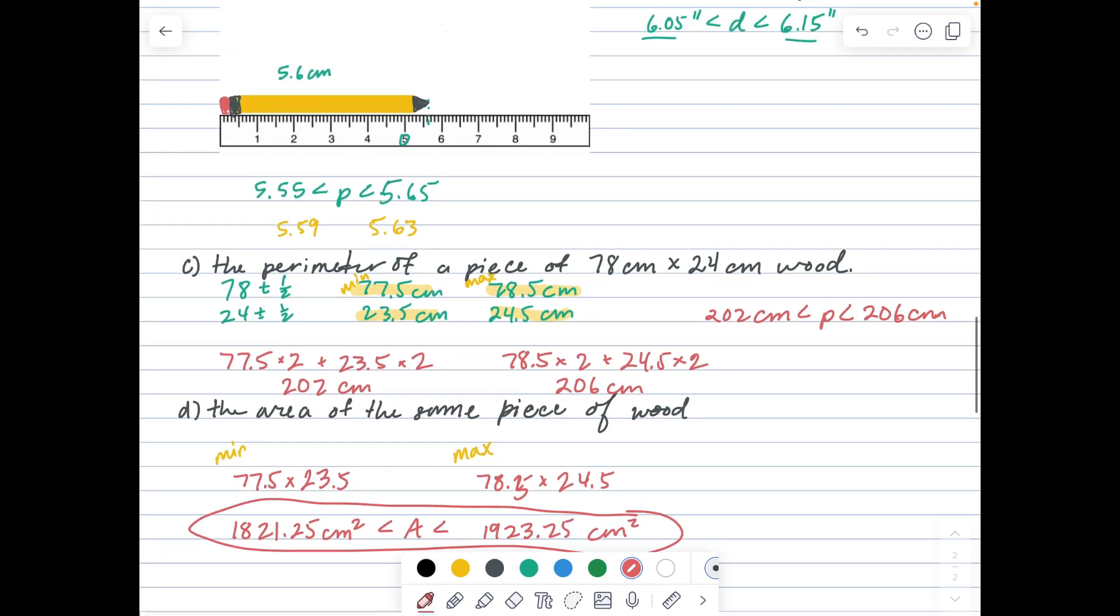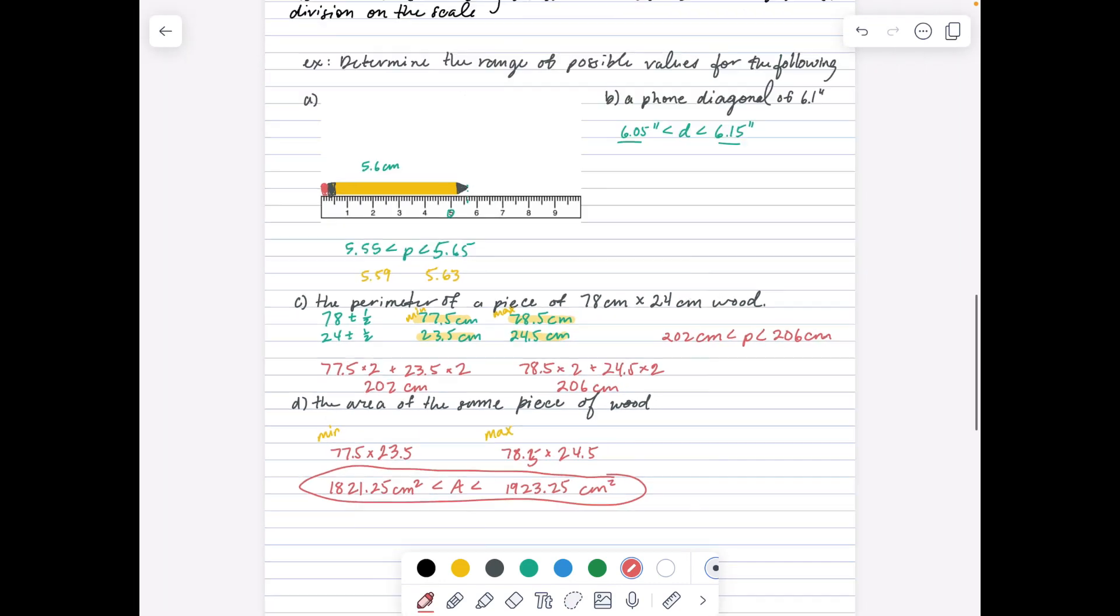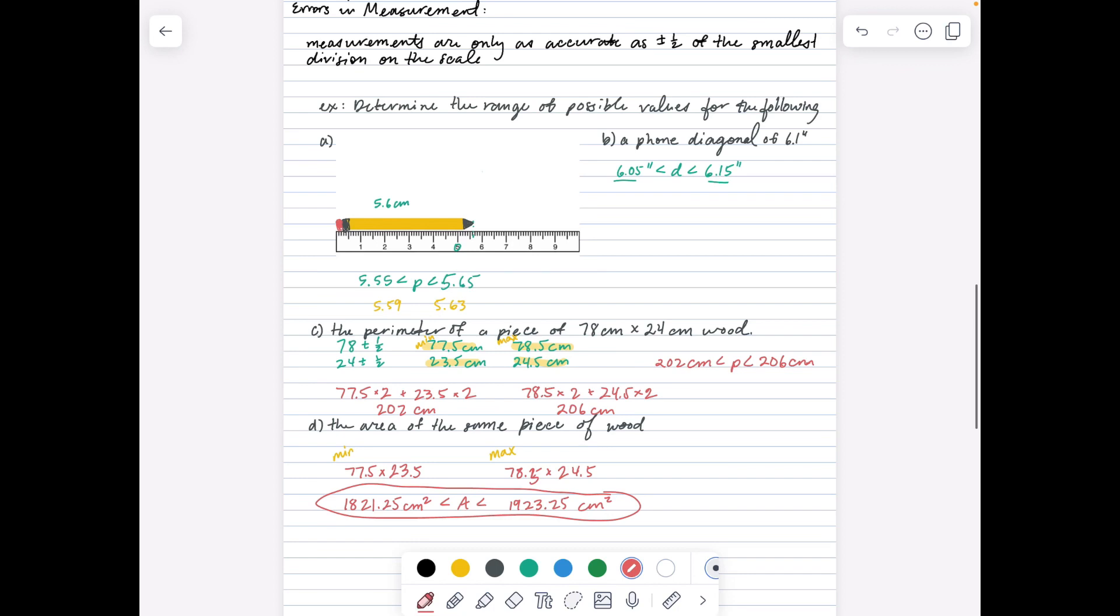When doing any calculations, you need to add plus or minus half of the smallest increment, then use your minimum and maximum values to do further calculations to create a smallest and largest of whatever you're trying to measure.